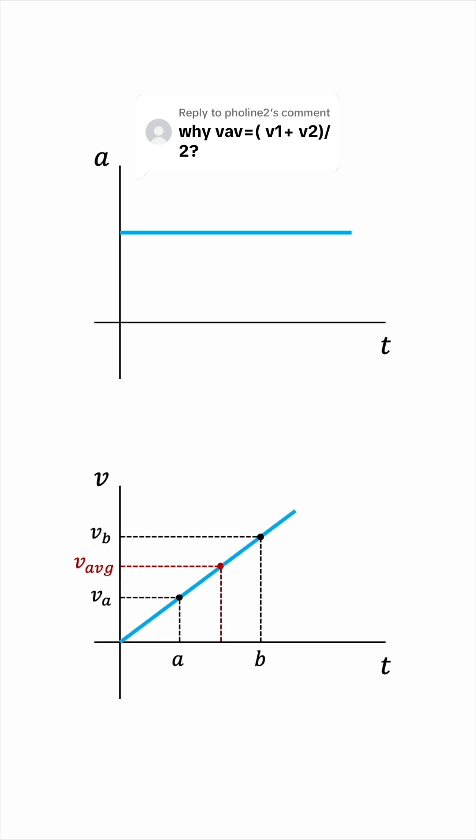If you're still not convinced, let's prove it. The average is given by this integral, the integral of the velocity from A to B, and then divided by the length of this interval, so B minus A.